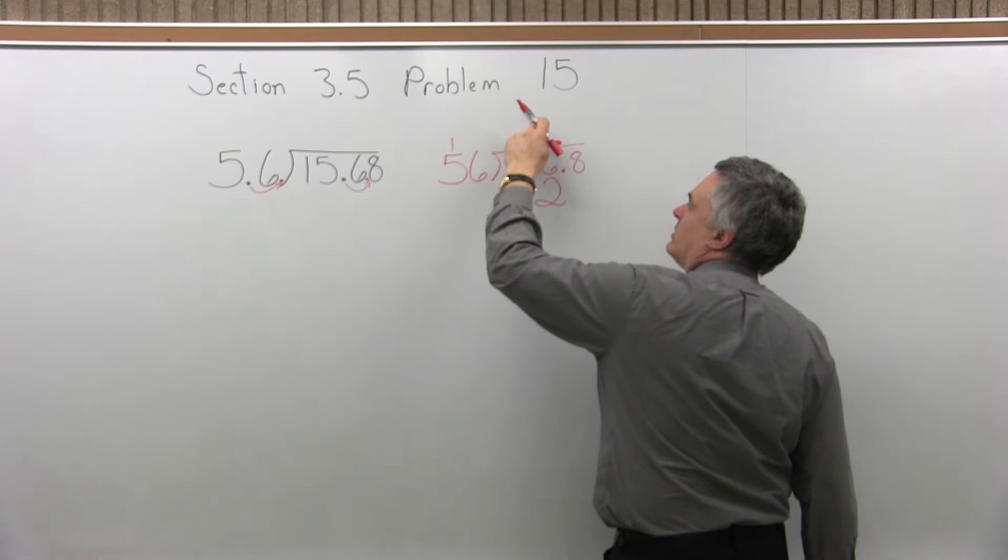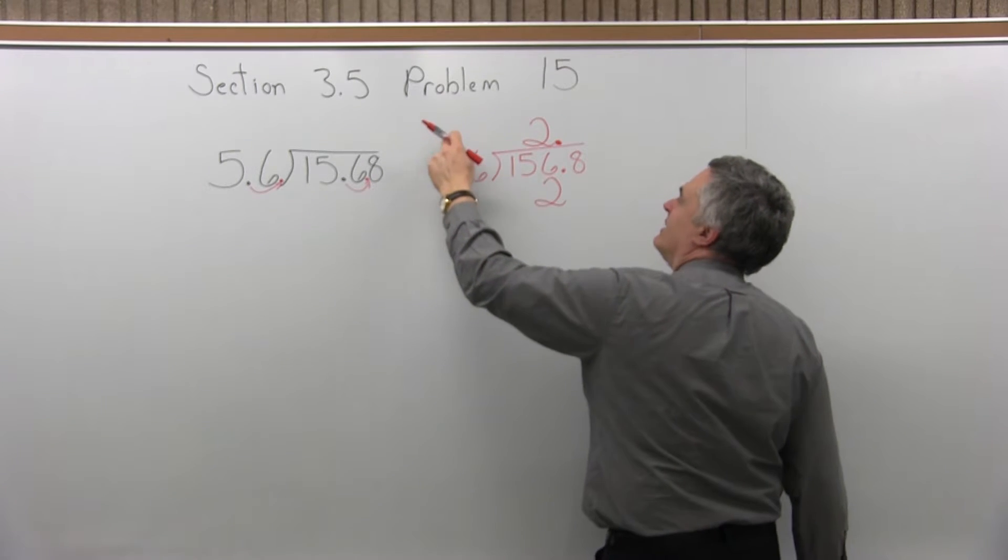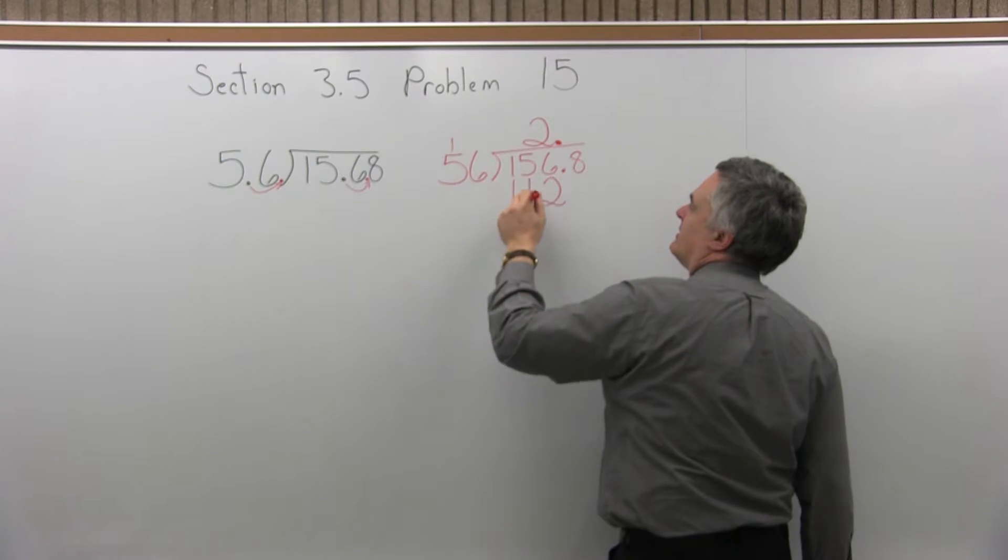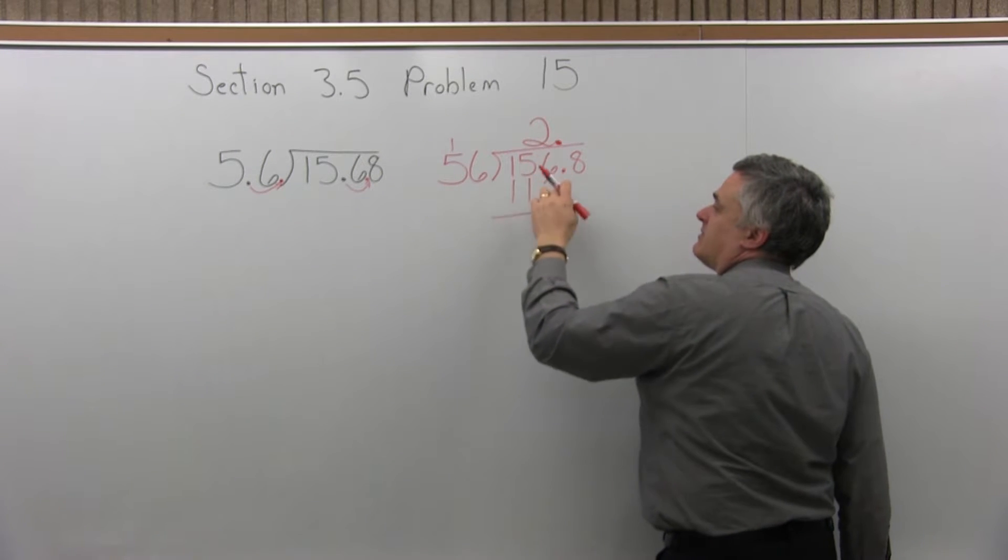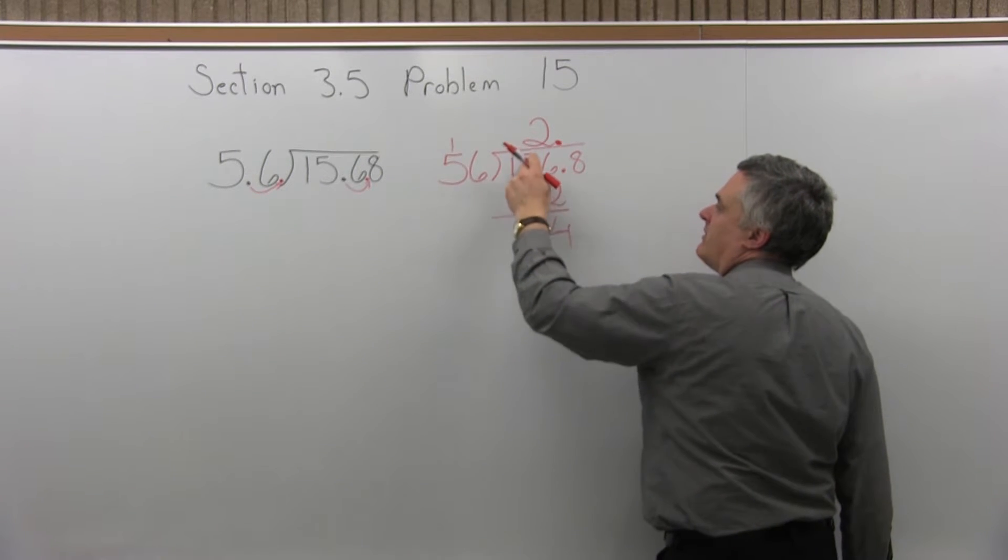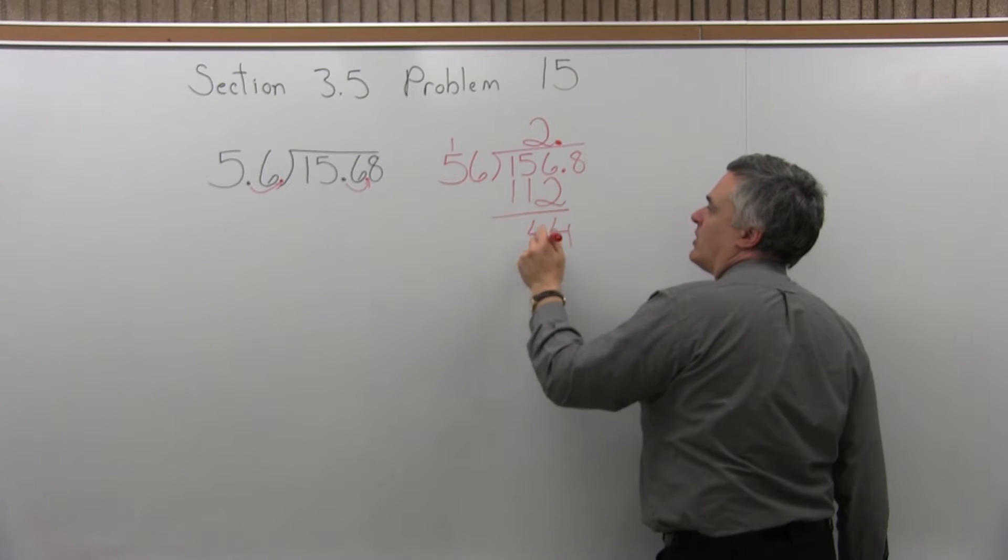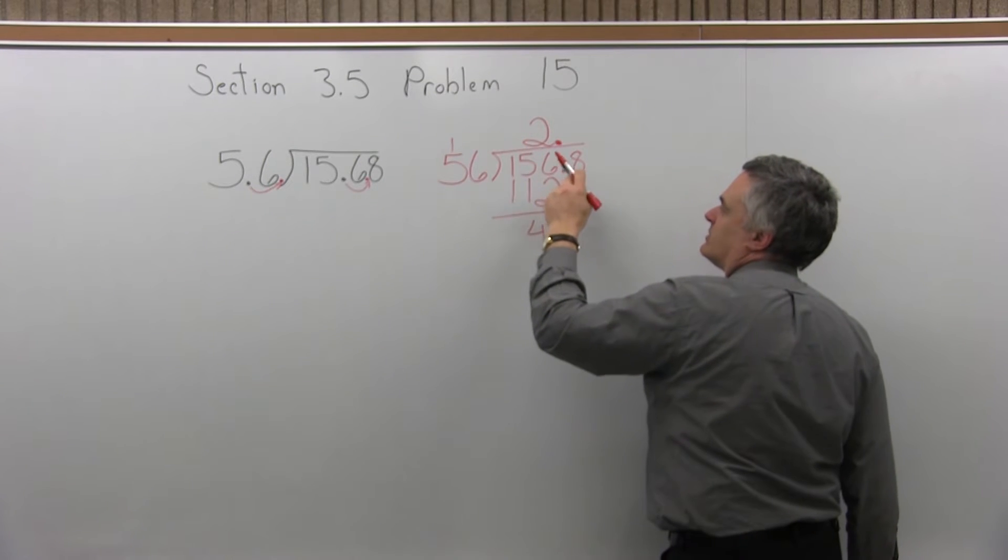So 2 times 6 is 12. And then, right, the 2 carry the 1. 2 times 5 is 10. 10 plus the 1 more we carried is 11. So I get 112. Now I can subtract. 6 minus 2 is 4. 5 minus 1 is another 4. 1 minus 1 really cancels off.